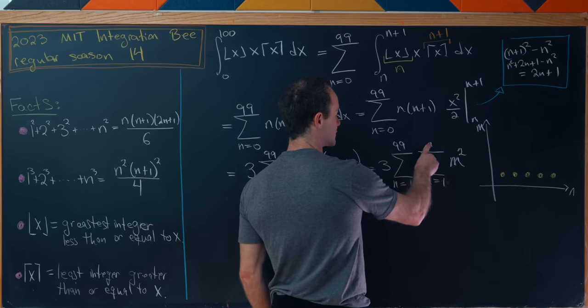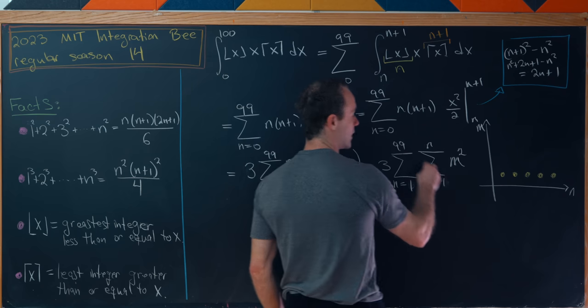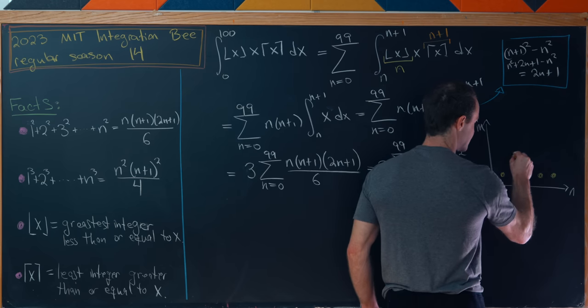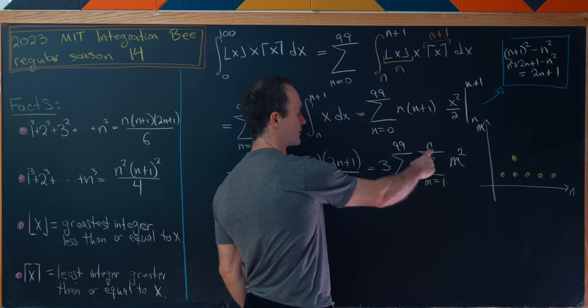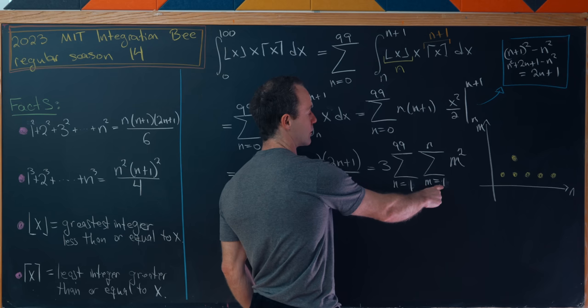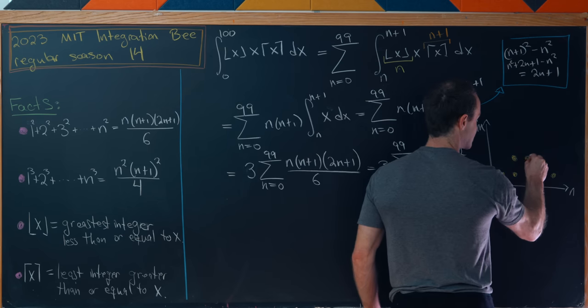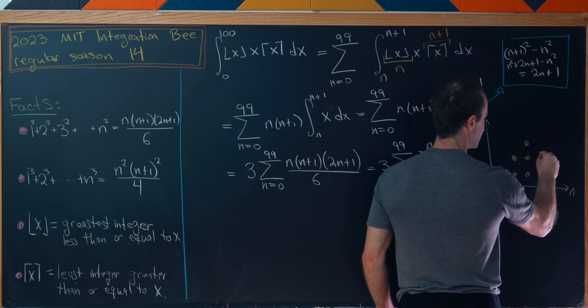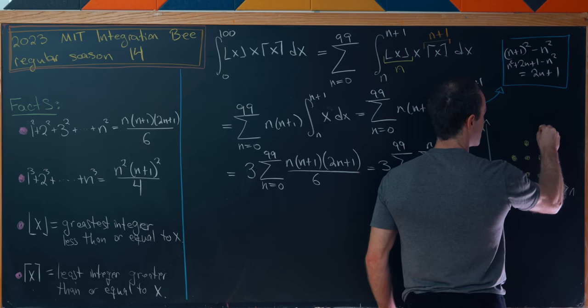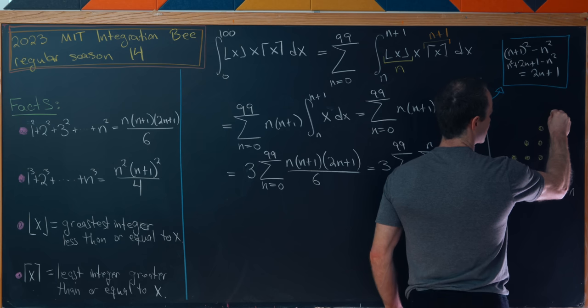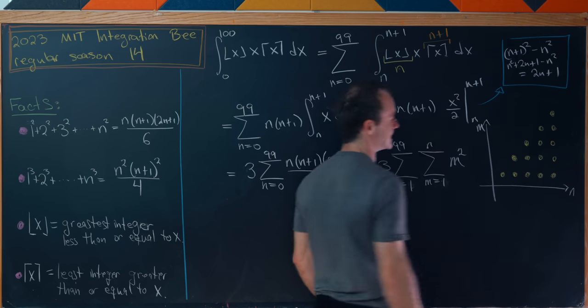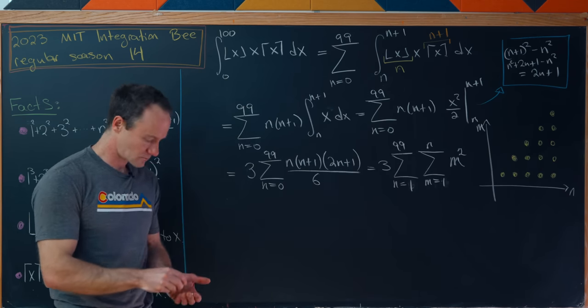And now notice if n is equal to 2 then we sum m from 1 to 2, so that means we sum along this dot as well. And if n is equal to 3 we sum m from 1 to 3, so that would be this dot and this dot. Now I think you can see where we're going. We're summing along this triangle. Now just pretend that this ends at 99.